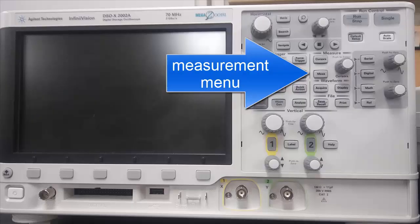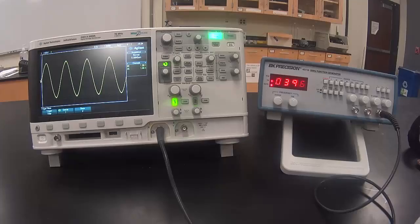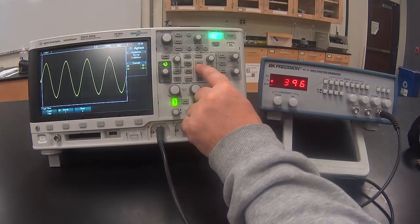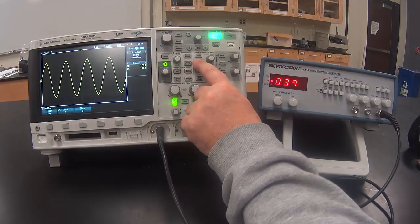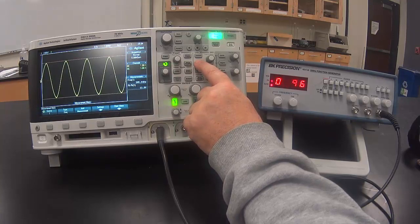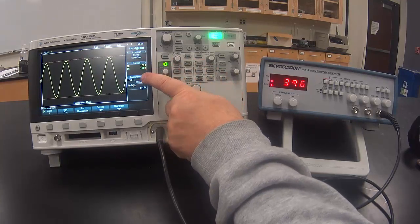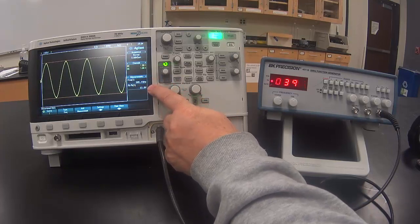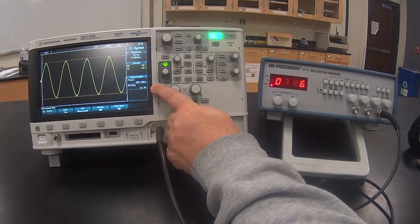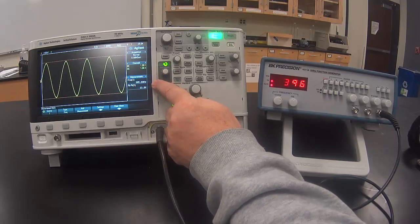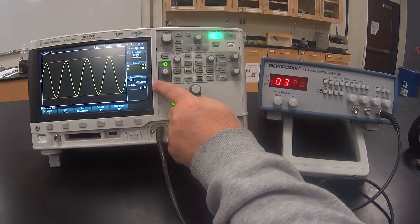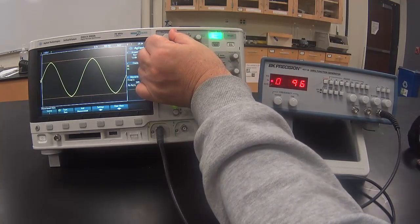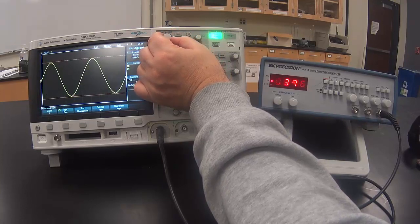This button selects the measurement menu. When you press the measurement menu button, by default two measurements show up on the screen. One is the frequency and the other is the peak to peak voltage. That's the voltage measured from the top to the bottom of the signal. On this modern scope we could just read the values that we want directly from the screen. But I'm going to show you how to calculate the frequency and the voltage.